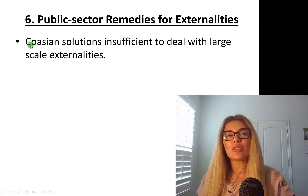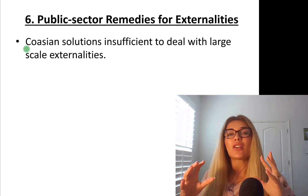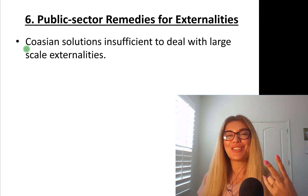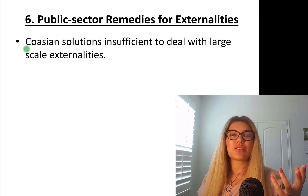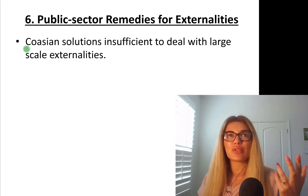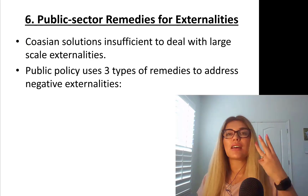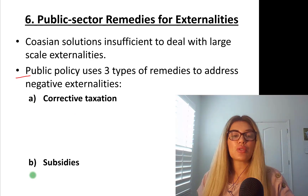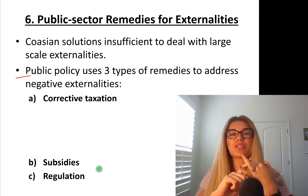We talked about the Coase solution and said that it's insufficient to deal with large-scale externalities. The Coase theorem has two parts — be sure to know those; if not, go to the previous video at part five. For large externalities such as global warming and other non-localized externalities, you need public sector intervention. Public policy uses three types of remedies to address negative externalities: number one is corrective taxation, number two is subsidies, and number three is regulation.